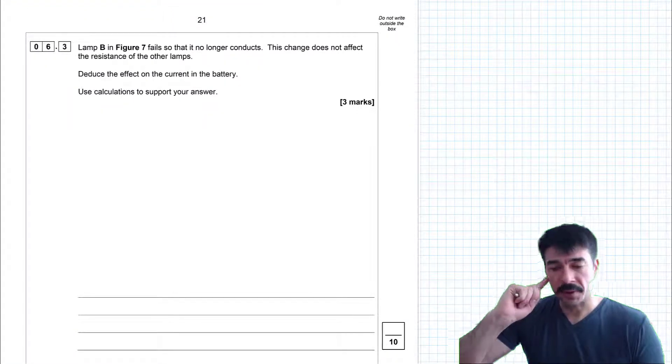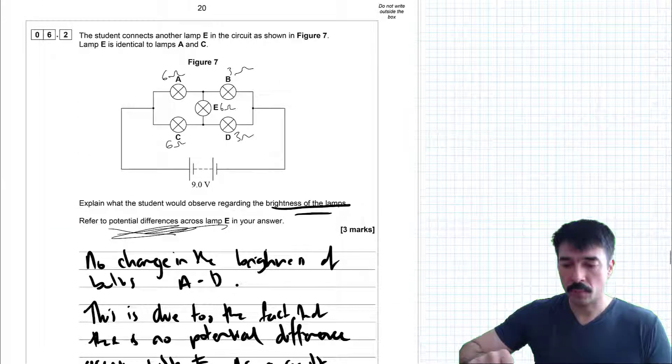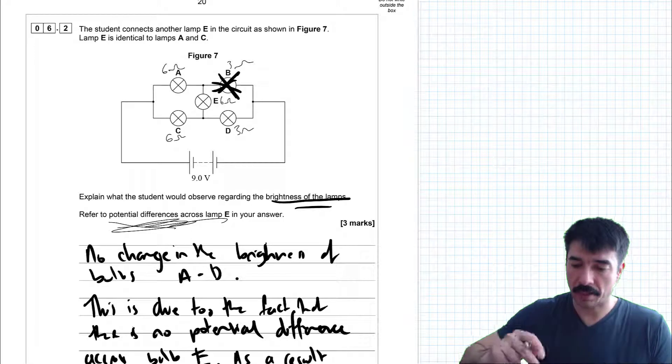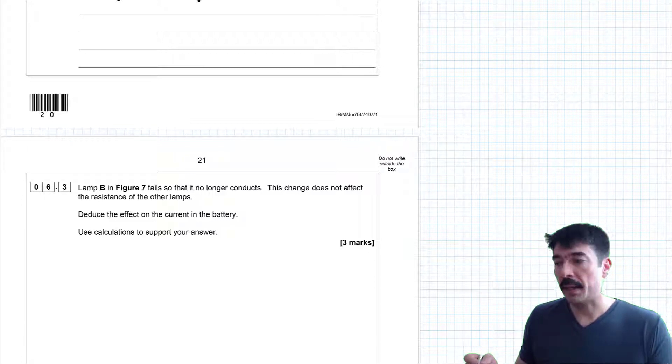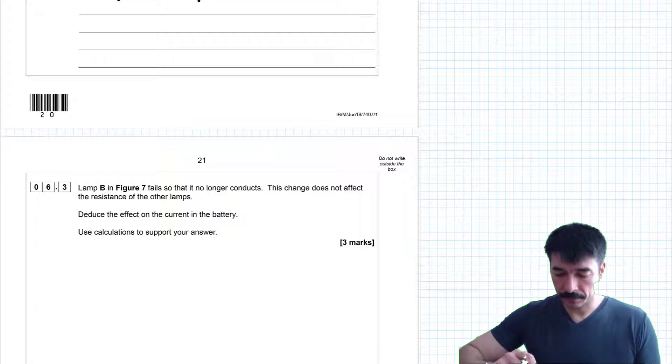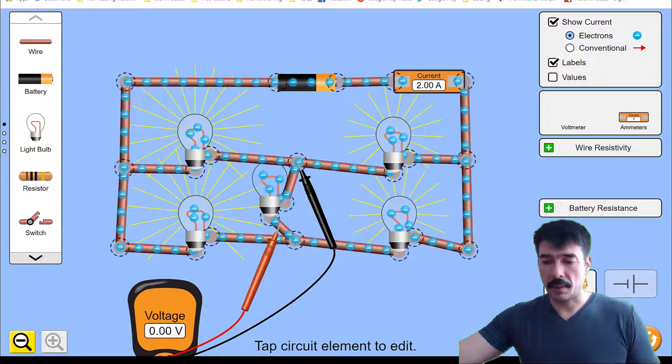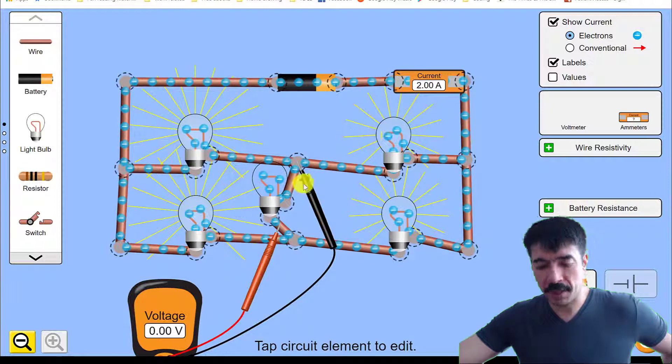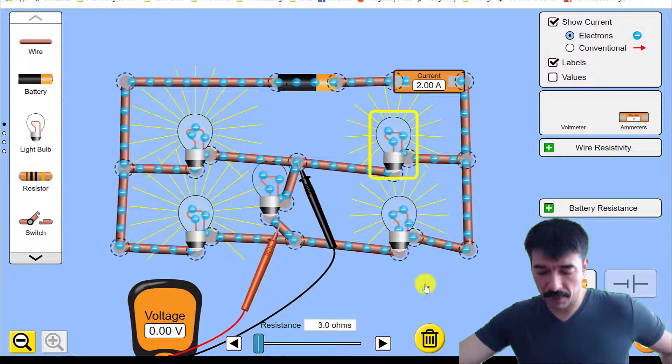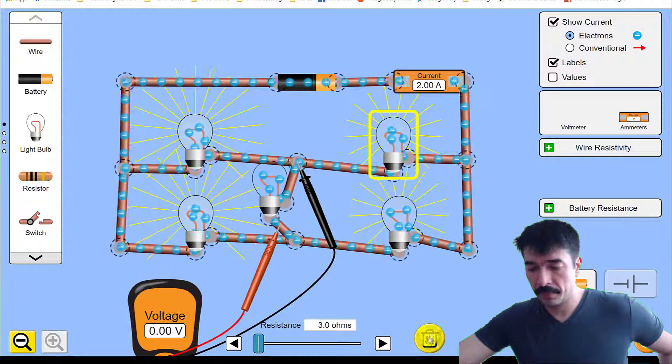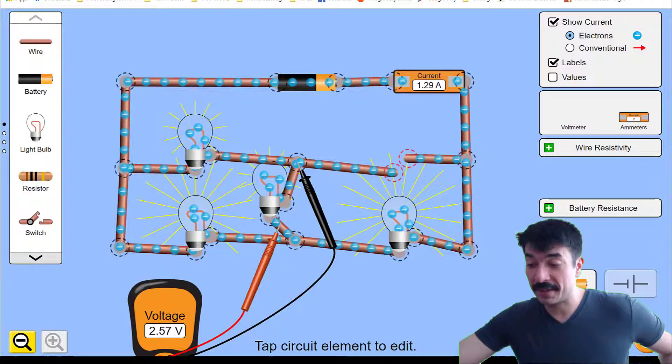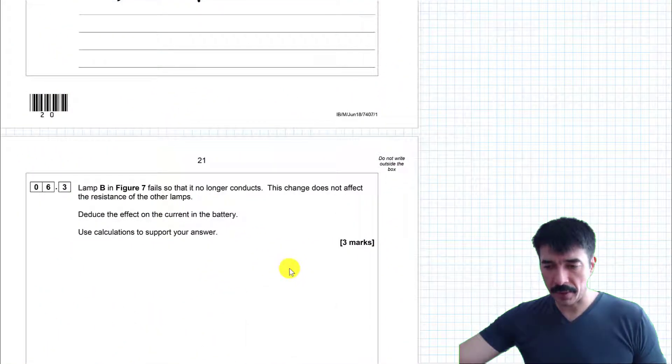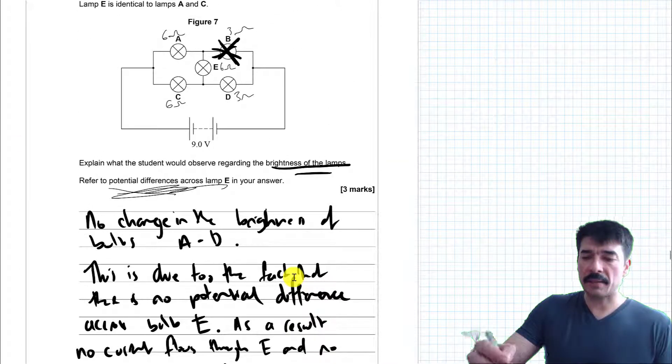Let's look at the final bit. Lamp B in figure seven fails. So lamp B, this one, is damaged. It no longer conducts. This change does not affect the resistance of the other lamps. Deduce the effect on the current in the battery. Use calculations to support your answer. I'm going to show you on the simulation what happens. So here we have the simulation. Just about running, my computer is really struggling with this. Let's try removing this. Now look, the current at the moment is two amps. I'm going to remove it and the current has reduced. So let's try and understand why that is.